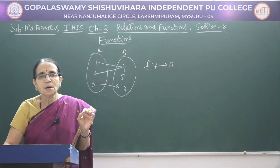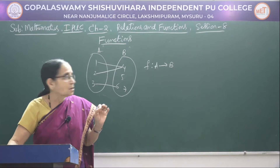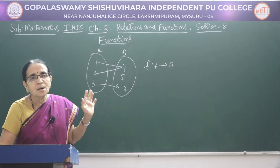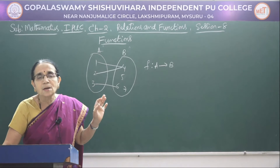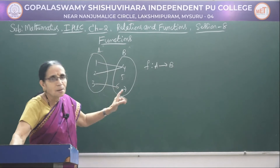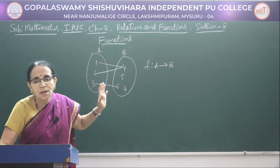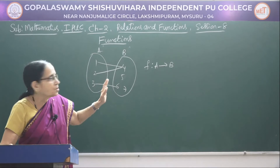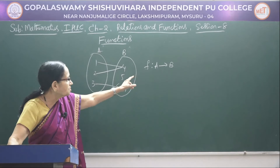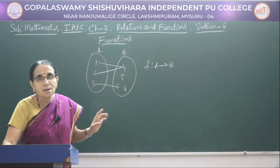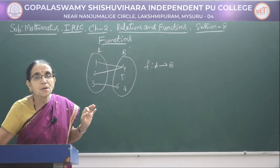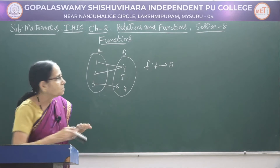Let A and B be two non-empty sets. Then a function from A to B is a rule which associates each and every element with the unique element of the set B, and is denoted as F: A → B. We read it as 'F is a function from A to B.'